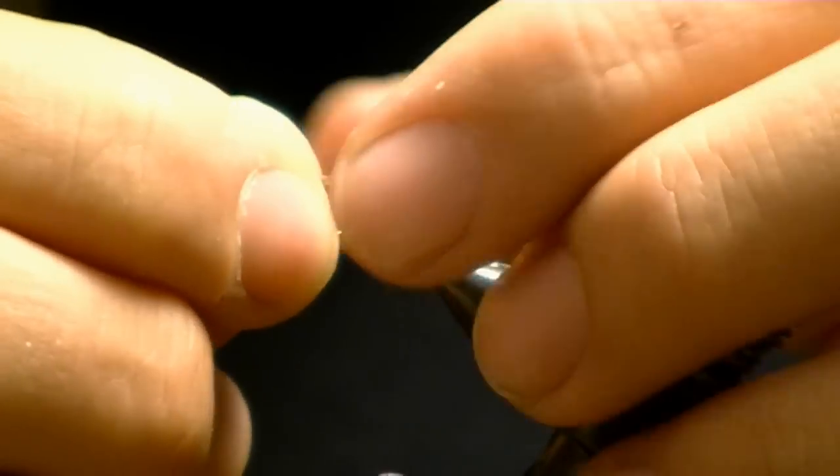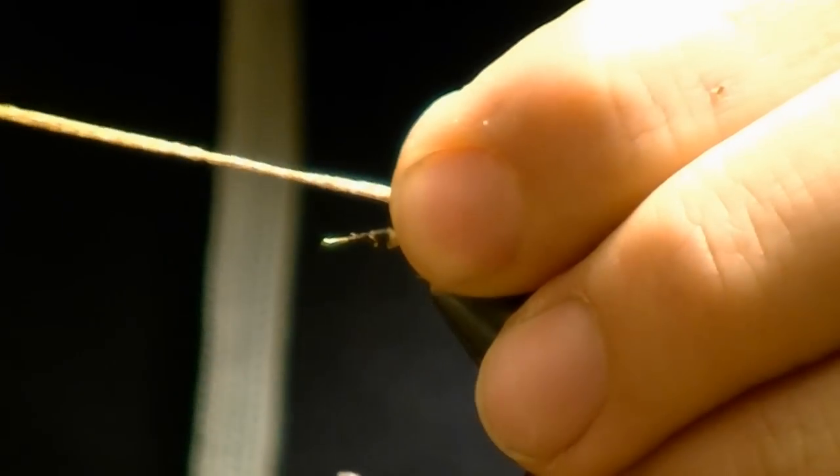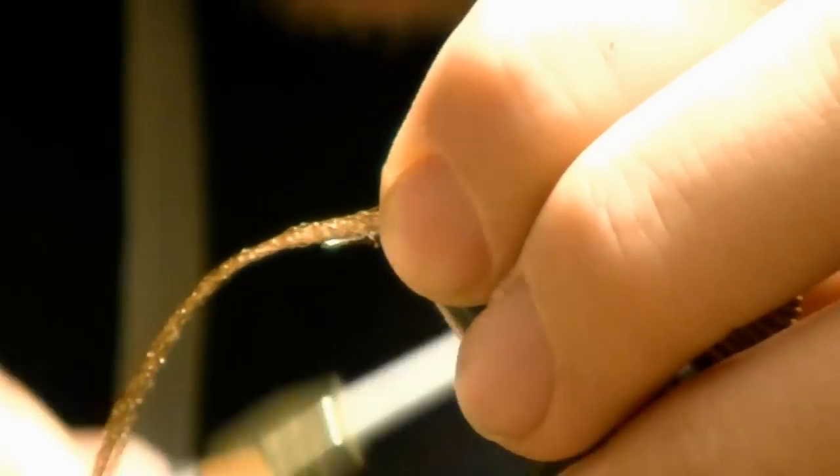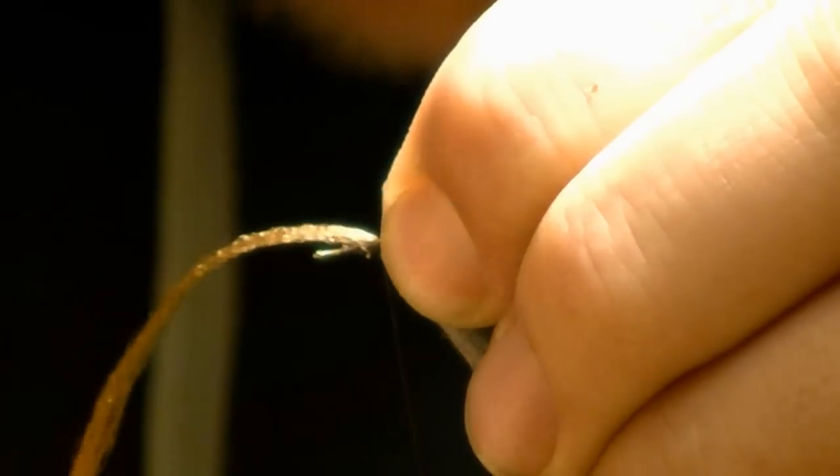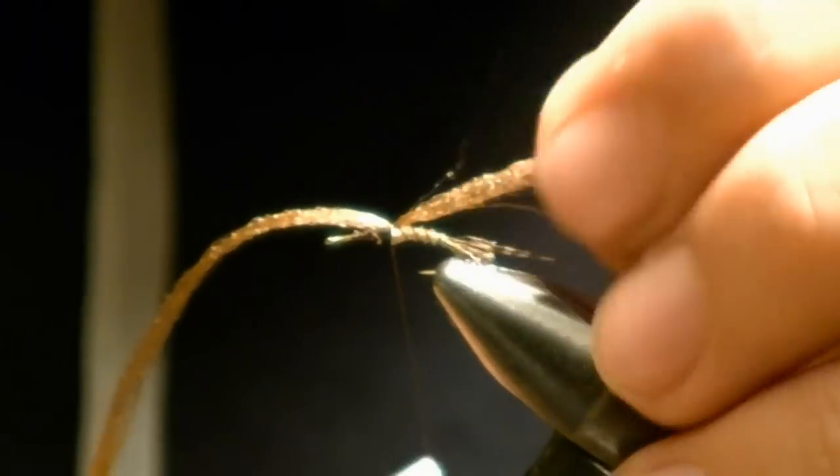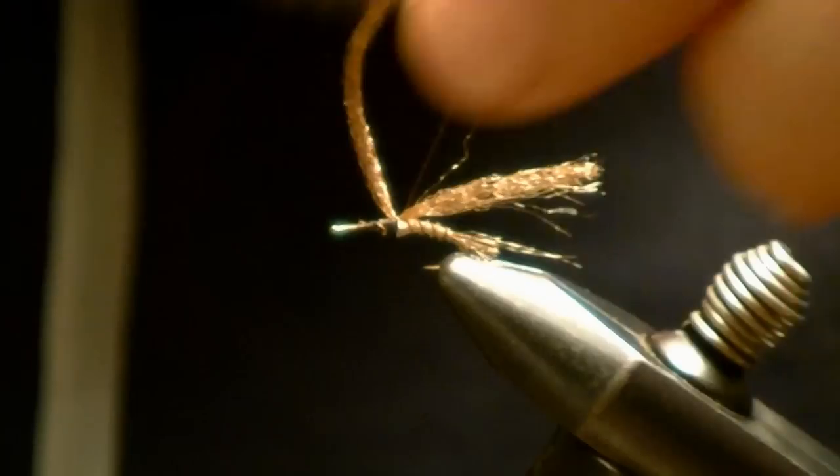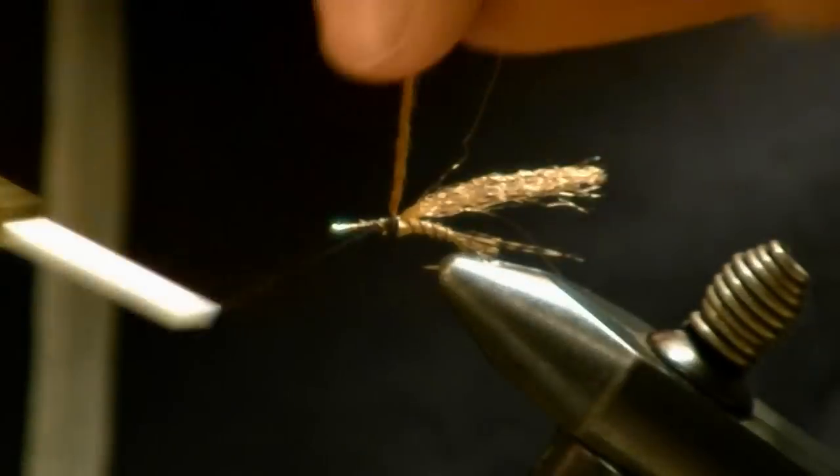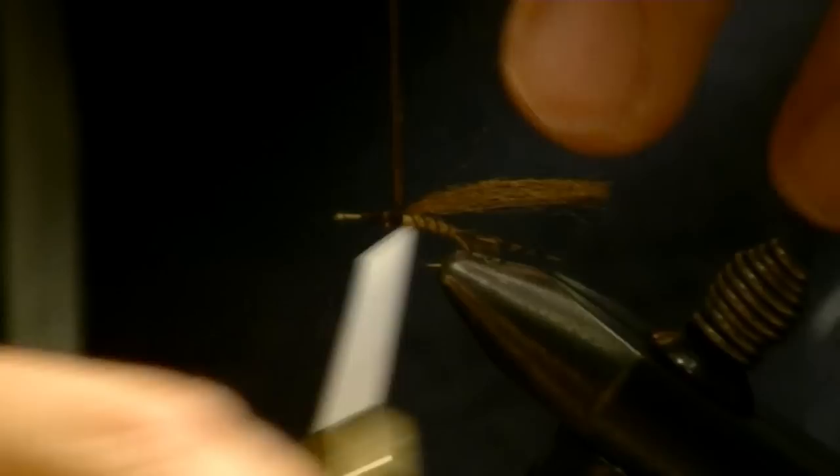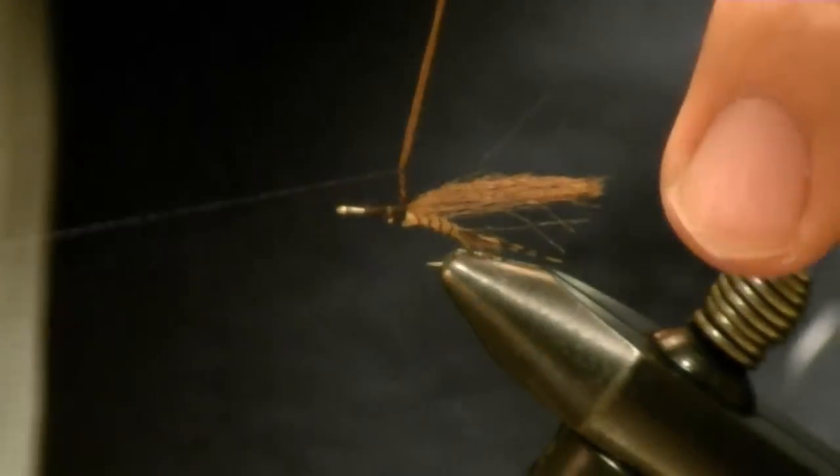I'm going to take a full piece of hare from the ear, tie it into the long section up in front. I've got three really good wraps to secure it, and I'm going to tie that parachute post on this. This is a lot easier with a parachute tool, but I don't have one. It's the old fashioned way.